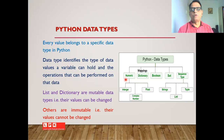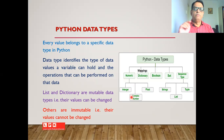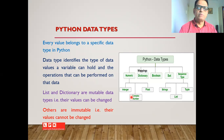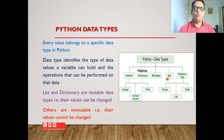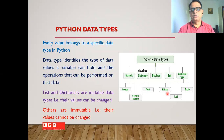As far as numbers or numeric values are concerned, we have integer, float, and complex numbers. Python provides the complex number data type which is not available in many other programming languages. It also has a boolean data type, and a set data type which is also not available in many other languages. In the sequence type we have strings, list, and tuple — so Python is a rich programming language as far as data types are concerned.